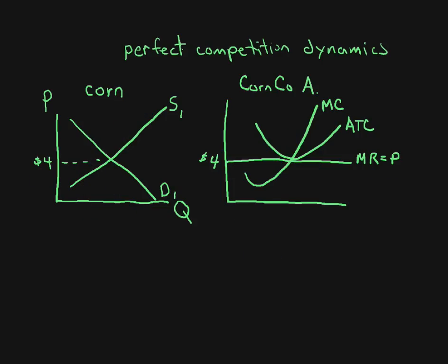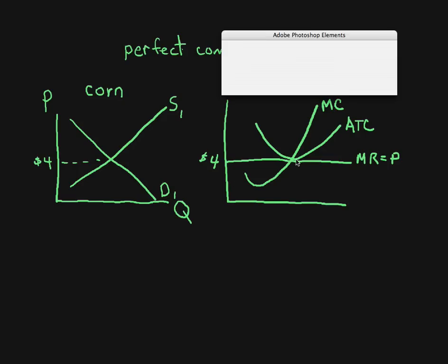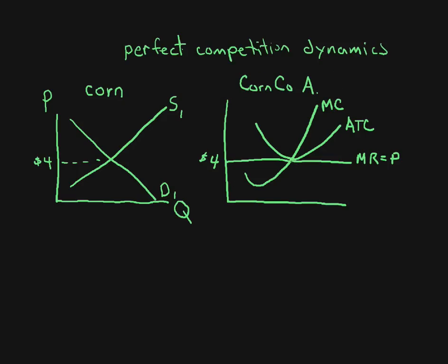And once again, we are in this situation. In the long run, in perfect competition, you end up in this particular situation where there's zero economic profits and you end up with zero economic profits and an equilibrium like this. Those are the dynamics of perfect competition.